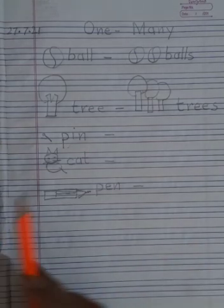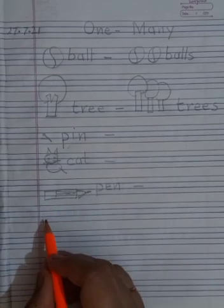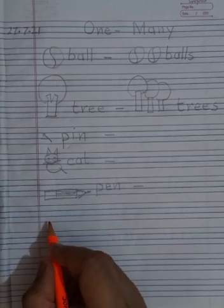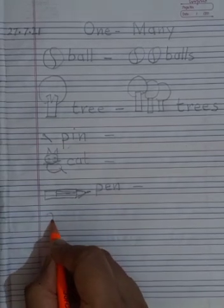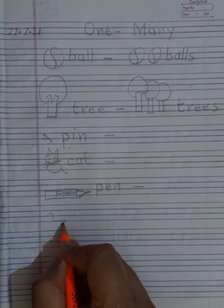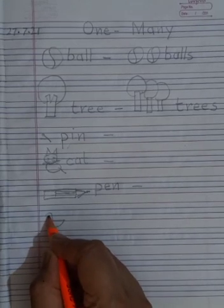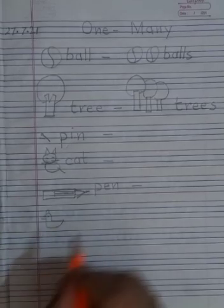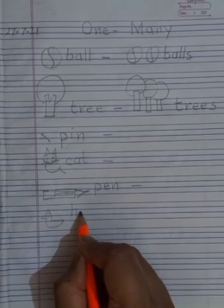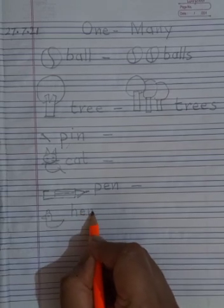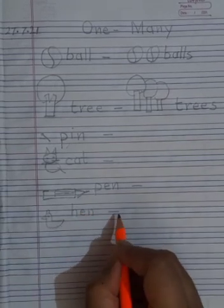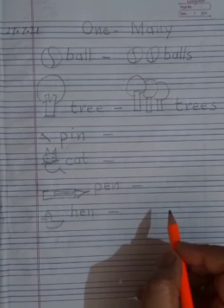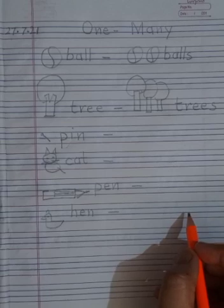Now the next one. I am going to draw a ball. A hen here. Simple. Hen. A hen. Many hens. So you need to draw the hens and then write down the word hens. Yes children.